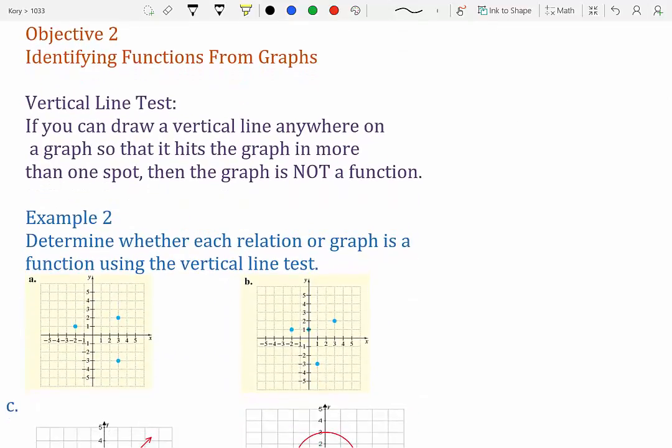Now objective 2, we want to identify functions from their graphs. So we do a thing called the vertical line test. If you can draw a vertical line anywhere on the graph so that it hits the graph in more than one spot, then it's not a function. So basically, if you draw a vertical line and there's two points on that line, it's not a function.